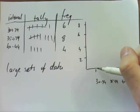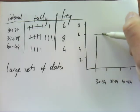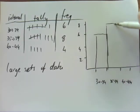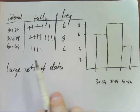So that'll go up to six, that'll go up to eight, and that will go up to four. So that's the frequency histogram that belongs to this frequency table.